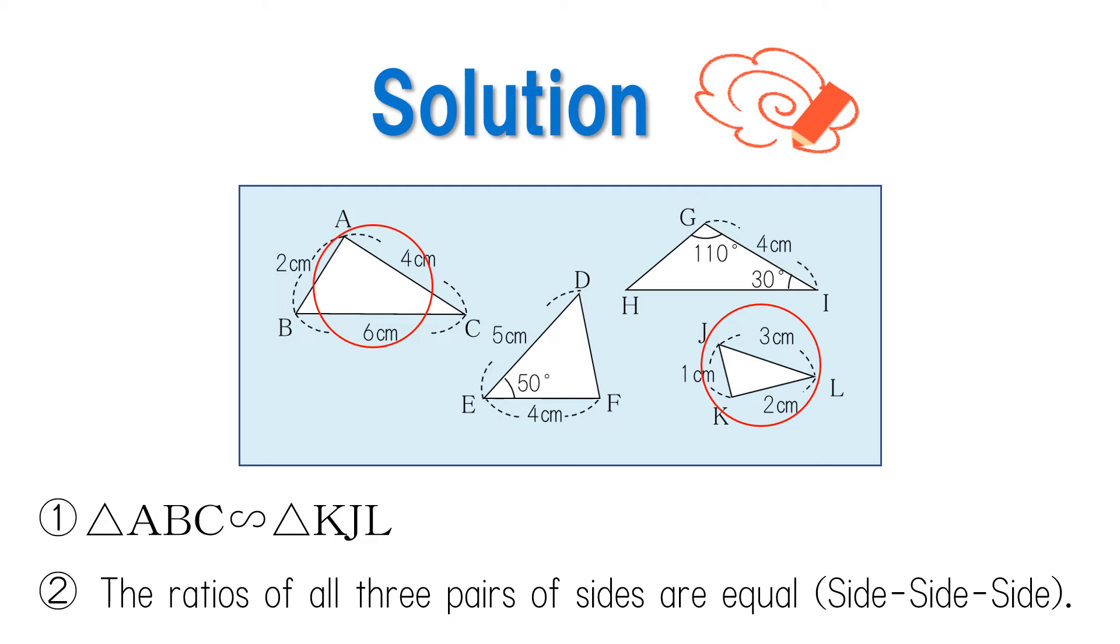Now let's check our answers. Triangle ABC is similar to triangle KJL. The similarity condition is that the ratios of all three pairs of sides are equal.